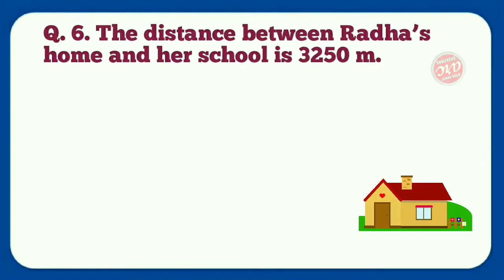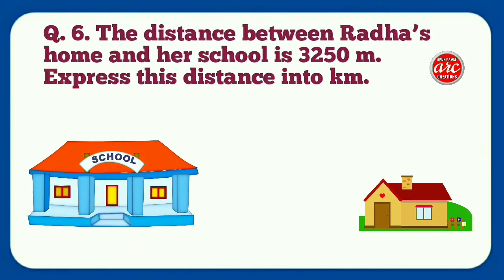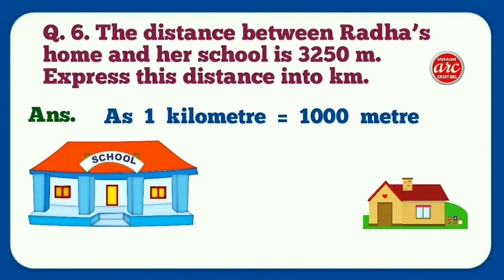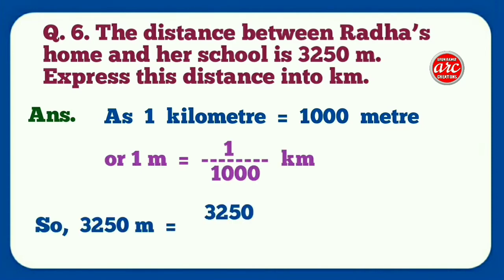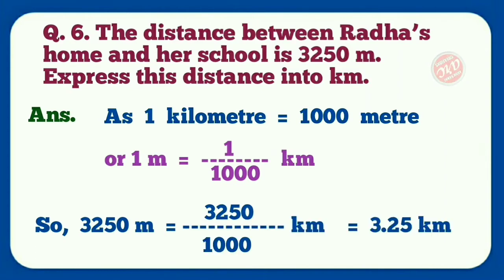Question number six: The distance between Radha's home and her school is 3250 meter. Express this distance into kilometer. Answer: We know that one kilometer is equal to 1000 meter, or one meter is equal to one by thousand kilometer. So 3250 meters is equal to 3250 by thousand kilometer, that is equal to 3.25 kilometer.